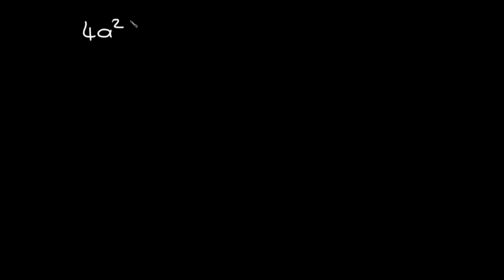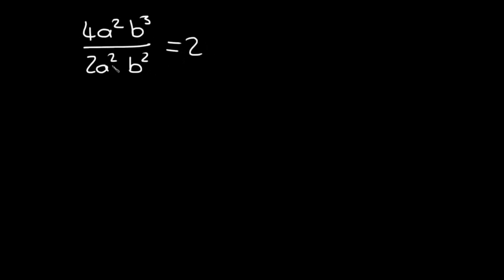One more example of Law 2: we have 4a squared p to the power of three, over 2a squared p squared. We divide the coefficients first: four divided by two is two. Then a squared over a squared — when you divide something by itself it equals one, so we don't write it. Finally, p to the power of three divided by p squared: three minus two gives one, so the answer is just 2p.